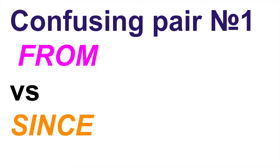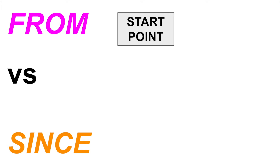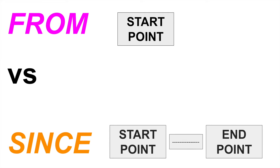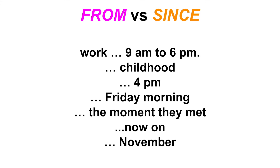Hello everyone. In this tutorial we are going to deal with the confusing pair number one: 'from' versus 'since'. Our main task today is to understand the difference. The core difference is the following: 'from' indicates the starting point of the action, while 'since' indicates not only the start point and the end point, but the duration of the entire action.